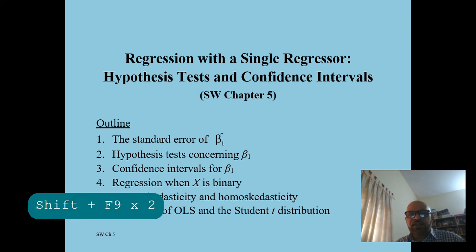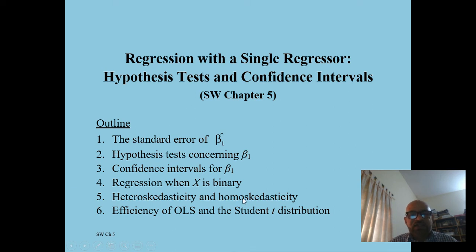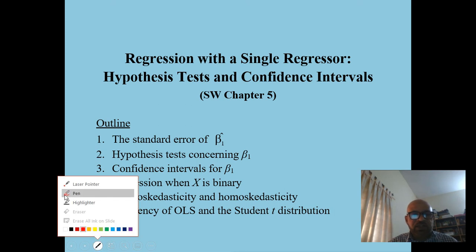This lecture covers Chapter 5 of Stock and Watson's Introduction to Econometrics: regression with a single regressor, hypothesis tests, and confidence intervals. We will discuss the sampling distribution of beta 1 hat, standard error of beta 1 hat, how to test the hypothesis that beta 1 equals zero, how to construct a confidence interval for beta 1, and its interpretation. We will also discuss regression when x is a binary dummy variable, and heteroscedasticity versus homoscedasticity.